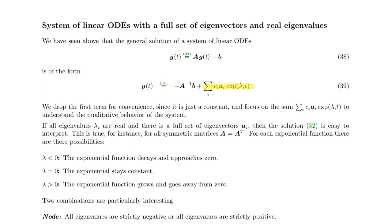If the eigenvalues are real, then the solution is relatively easy to interpret. For each eigenvalue lambda, there are three possibilities: lambda can be smaller than zero, it can equal zero, or it can be greater than zero. We know that the corresponding exponential solution would decay for lambda less than zero, would stay constant for lambda equals zero, and would exponentially grow for lambda greater than zero.